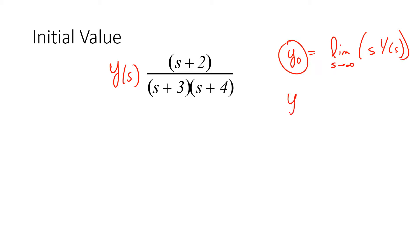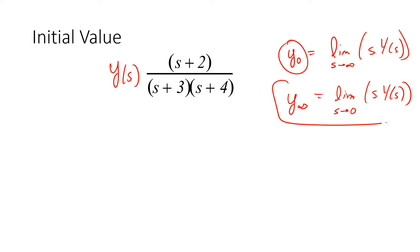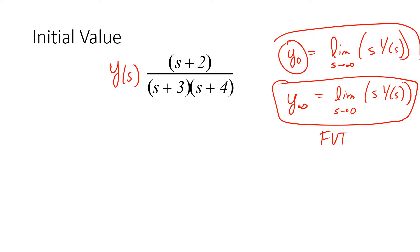The final value theorem states that your final value — for stable systems only — is equal to the limit as s goes to zero of that same quantity, s times y(s). This is our final value theorem, and that is our initial value theorem.